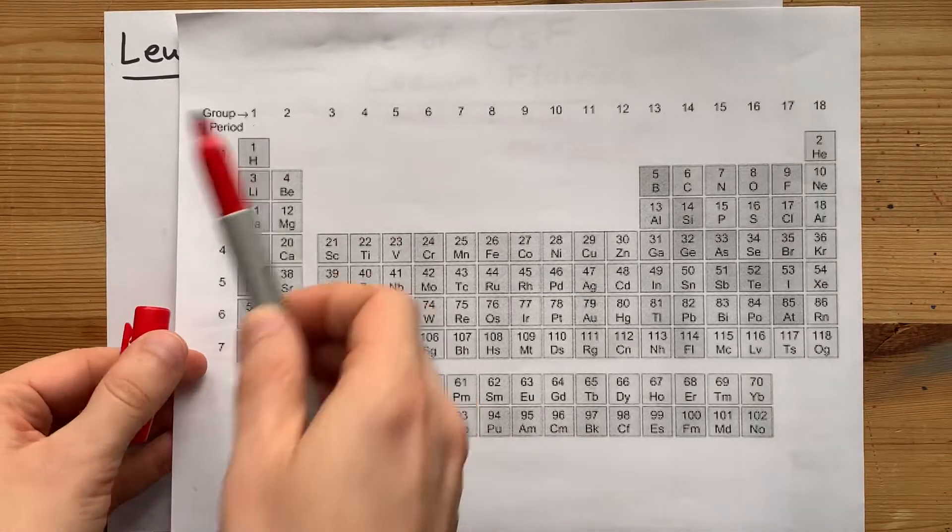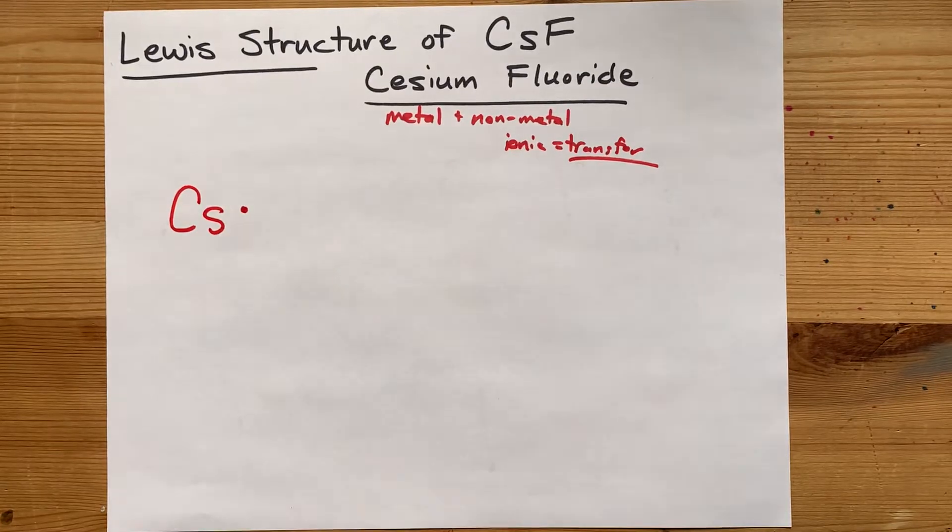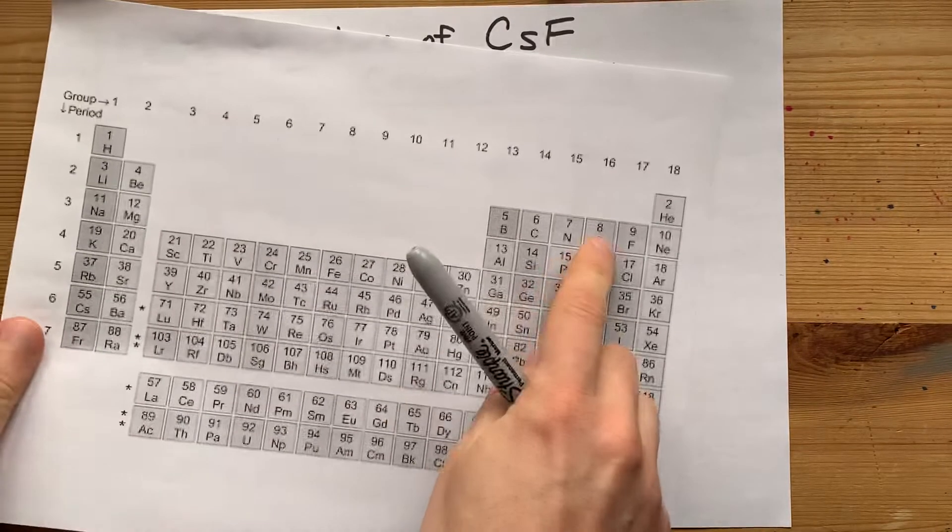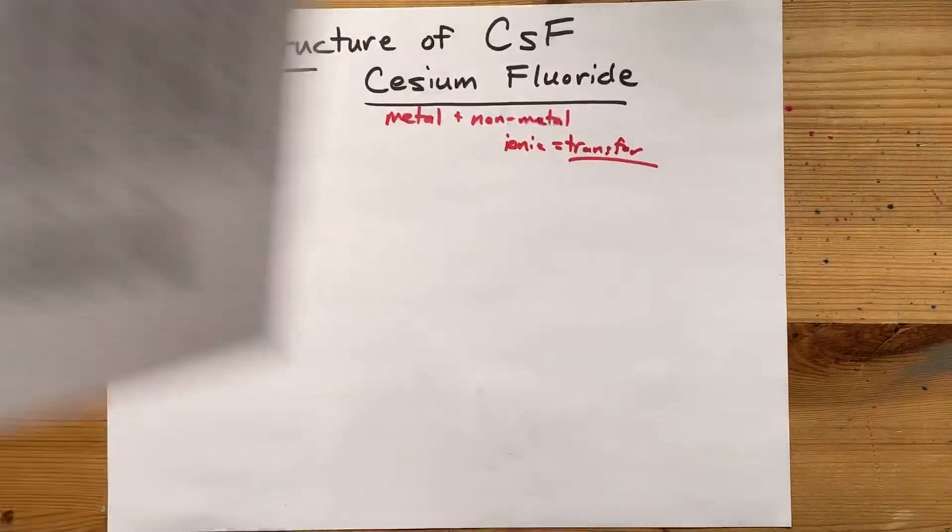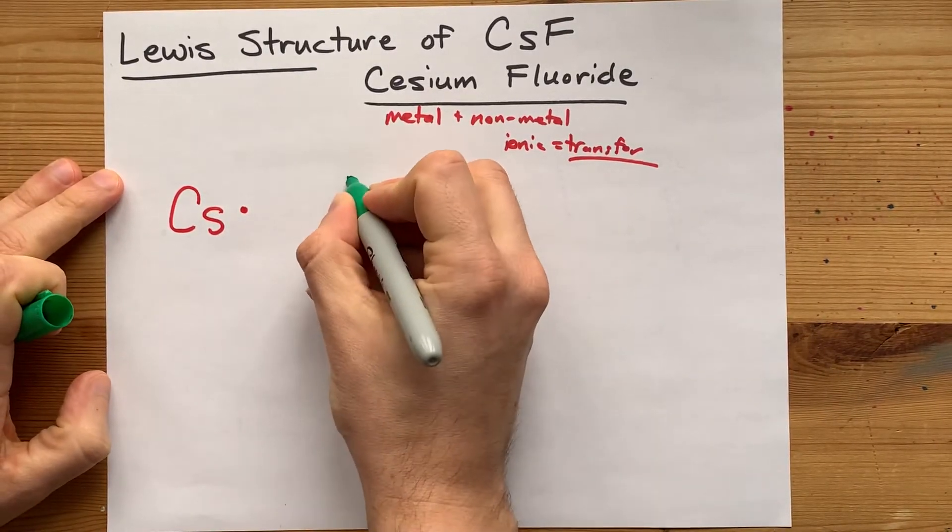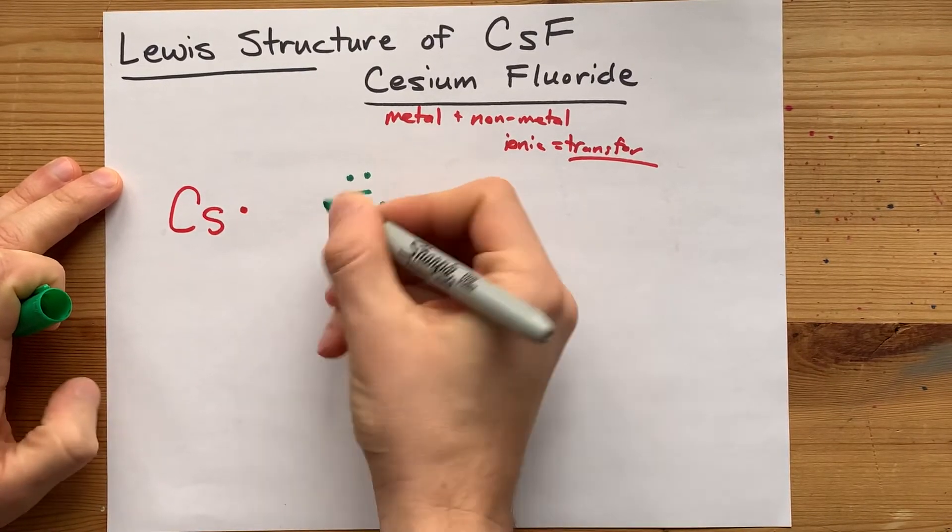Cesium is in group 1. That means it brings one valence electron - it has one electron in its outer shell. Fluorine is in group 17. It brings seven valence electrons: 1, 2, 3, 4, 5, 6, 7.